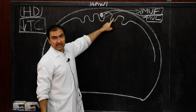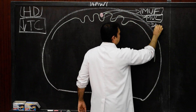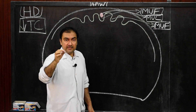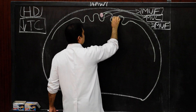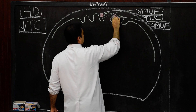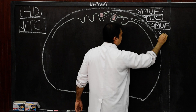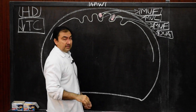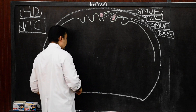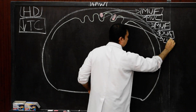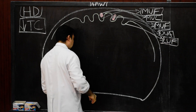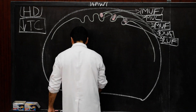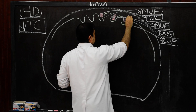Then there will be the medial umbilical fold. This fold is because of the presence of obliterated umbilical arteries. Finally, the third fold will be known as the lateral umbilical fold, which is produced because of the underlying structure known as the inferior epigastric vessels.